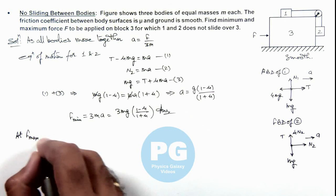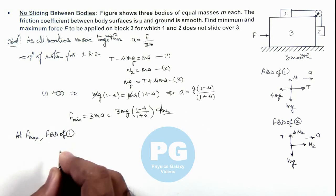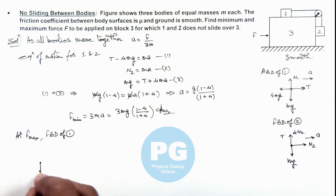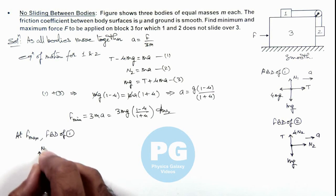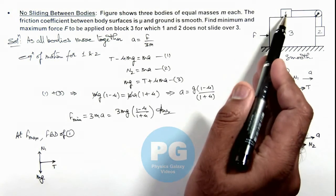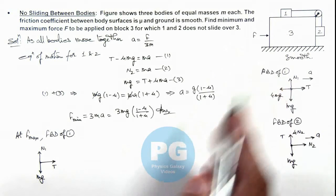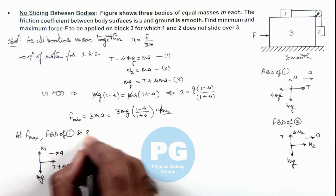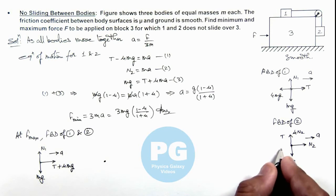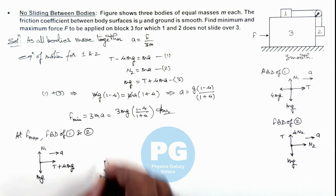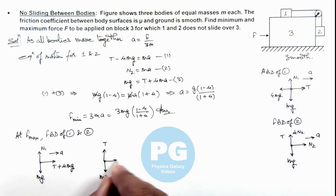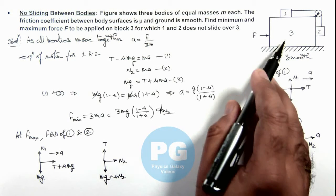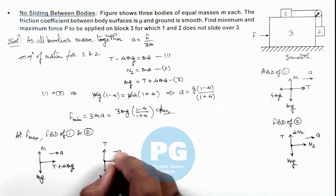At F max, the free body diagram of block 1 shows mg acting downward, N1 in the upward direction, and tension toward the right. Since block 1 has a leftward sliding tendency with respect to block 3, friction acts on it in the rightward direction, equal to mu mg. Block 1 still moves toward the right with acceleration ay. For block 2, mg acts downward, tension T acts upward, and normal reaction N2 acts toward the right. The only difference is that friction mu N2 now acts downward since block 2 has an upward sliding tendency. Block 2 also moves toward the right with acceleration ay.